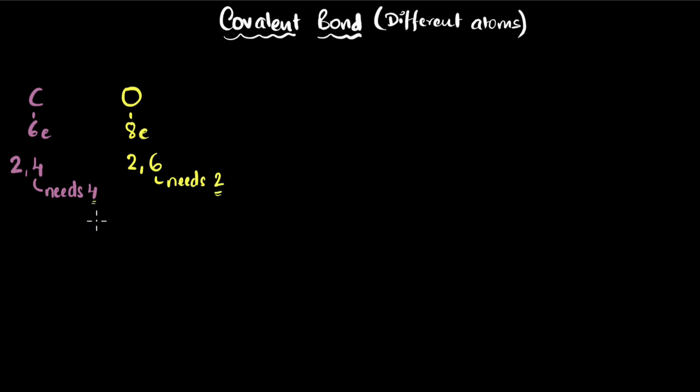So how will they form a bond? Well, this is going to share four. This is only going to share two. So what carbon can do now is it can share two with one oxygen atom and it can share the other two with another oxygen atom.